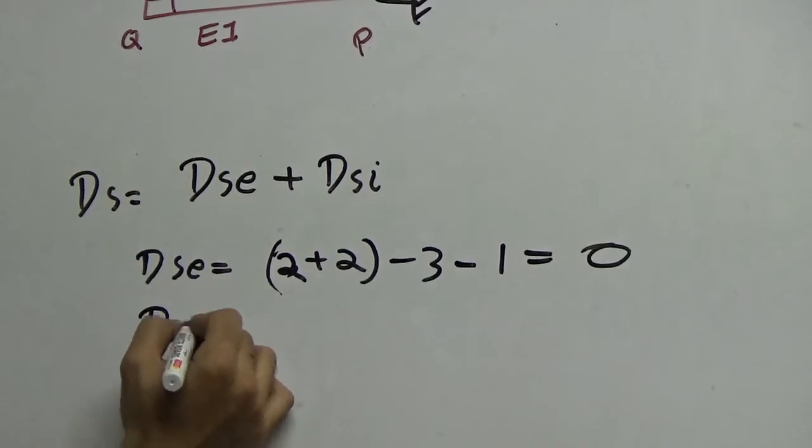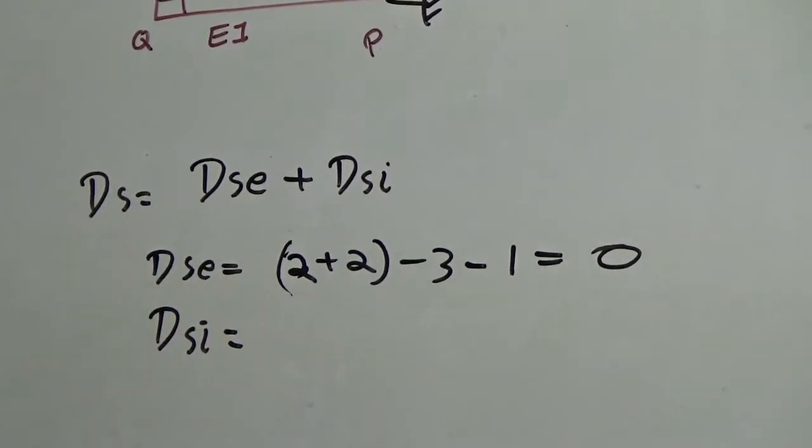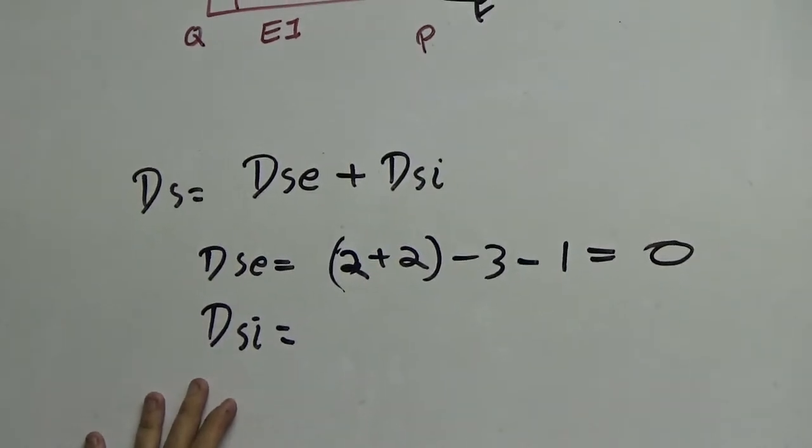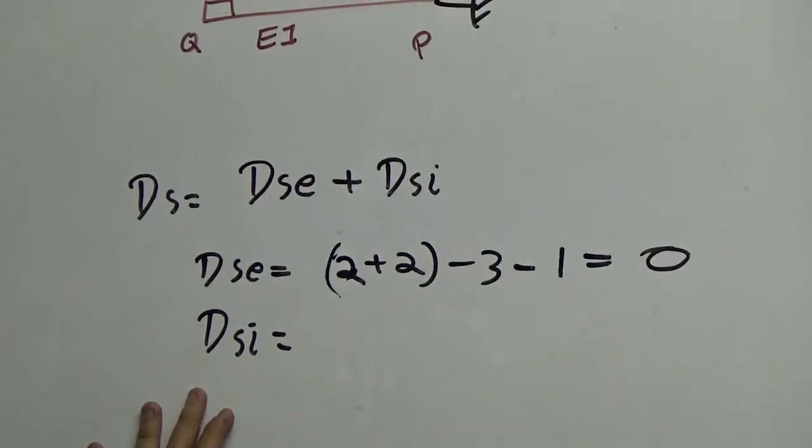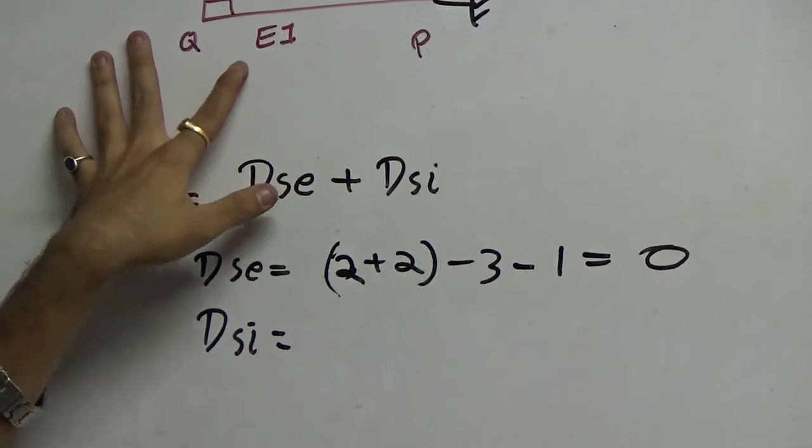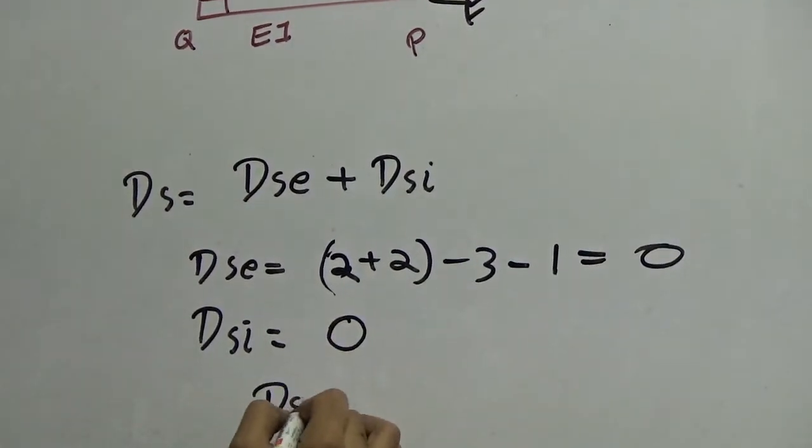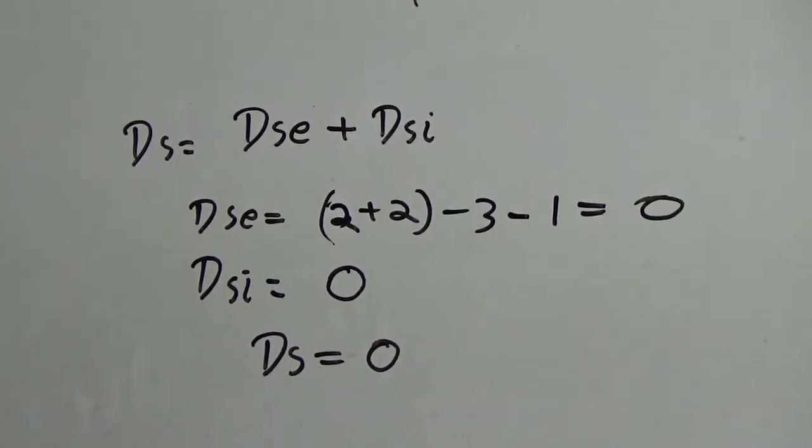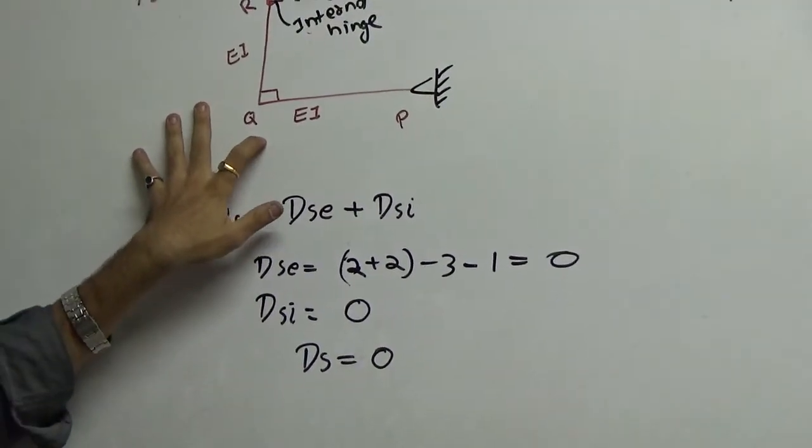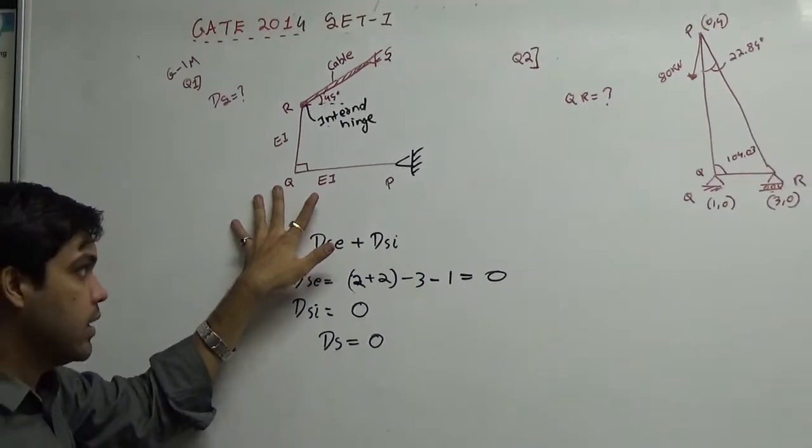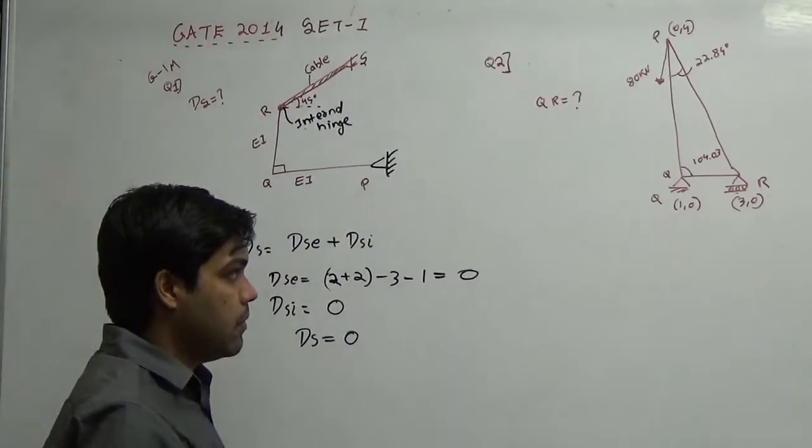What about the internal indeterminacy? Is there any concept of internal indeterminacy in case of open structures? No. It only occurs when there is a closed loop. So, is there any closed loop here? No. So, your internal indeterminacy becomes 0. So, what is the answer to this question is 0. The static indeterminacy of this problem is 0 and it can be easily analyzed just by the equilibrium equation without use of any additional compatibility condition. So, that was the problem number 1.